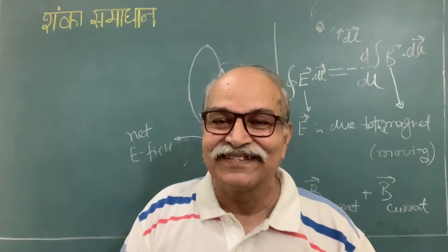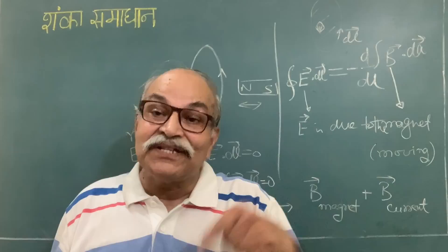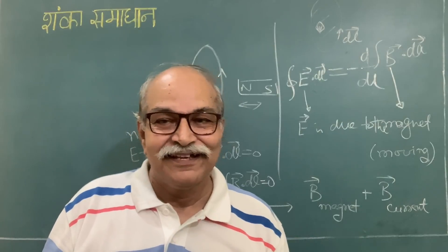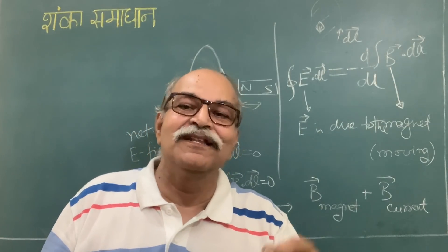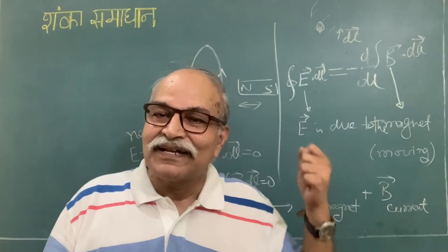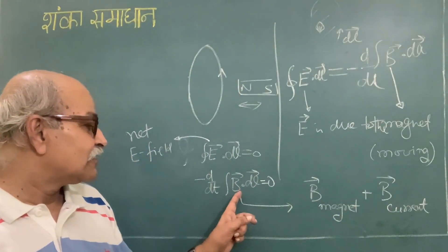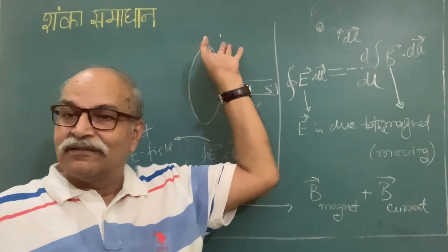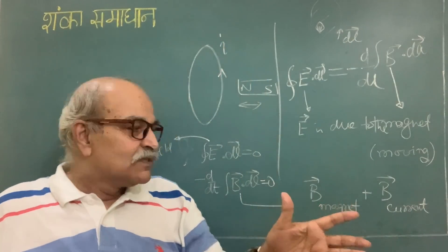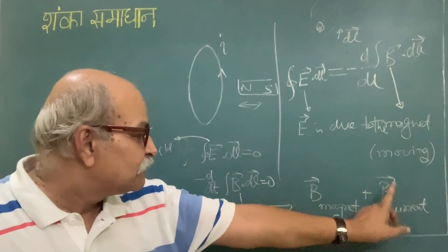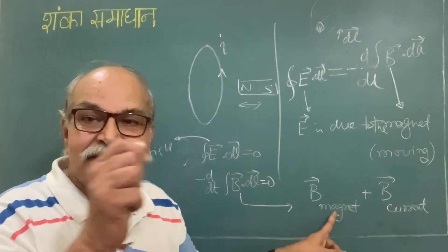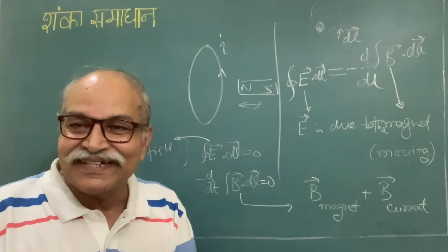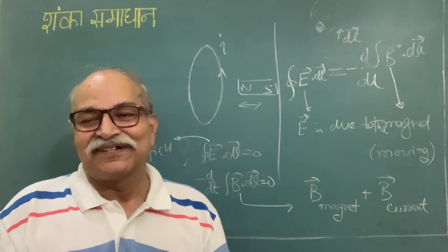In a normal conductor, Lenz's law gives the direction but the opposition is never complete — the flux still changes. In a superconductor, this opposition is complete. There is a current flowing, and at different instants the current adjusts appropriately so that at any instant the flux due to the current and the flux due to the moving magnet together keep the total flux constant — no dΦ/dt, no electric field, and Faraday's law is satisfied.